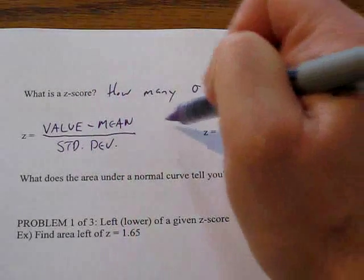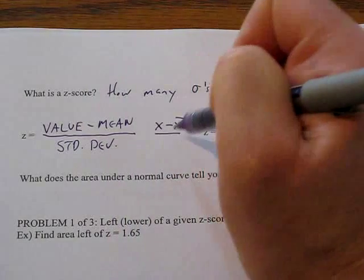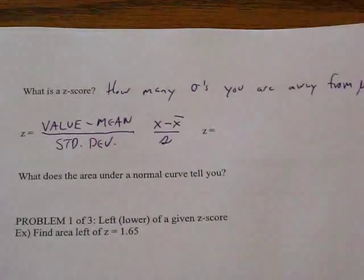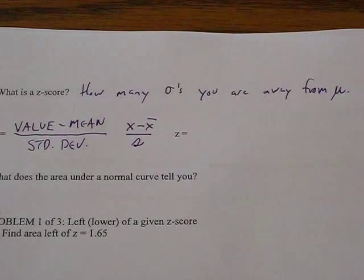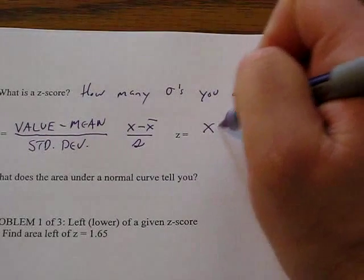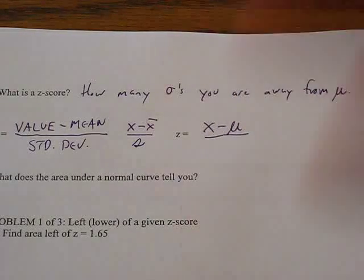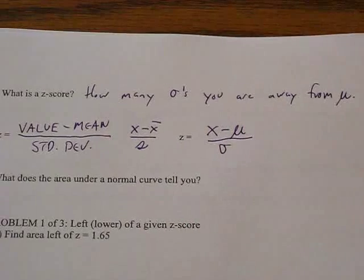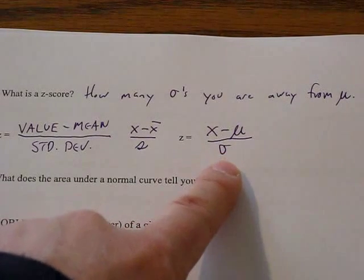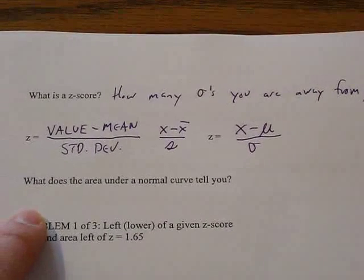And again, from previous chapters, that was usually given by the form x minus x-bar over s, and that was for a fixed set or a small set. But when we talk about the entire population, our value is going to be subtracted from mu, which is now our average with the entire population, and our standard deviation is going to be this lowercase Greek symbol for sigma.